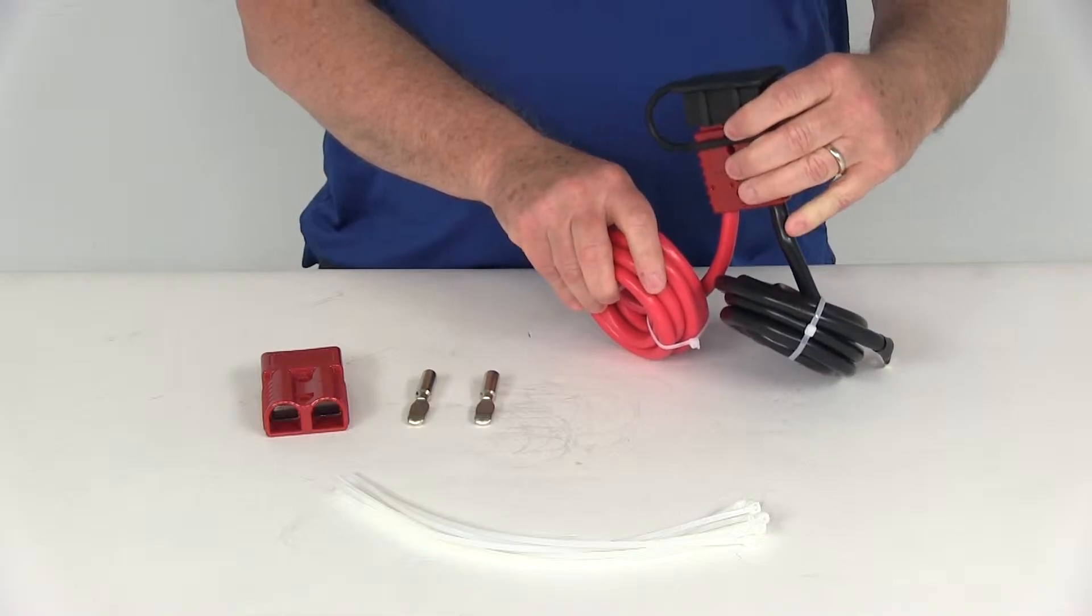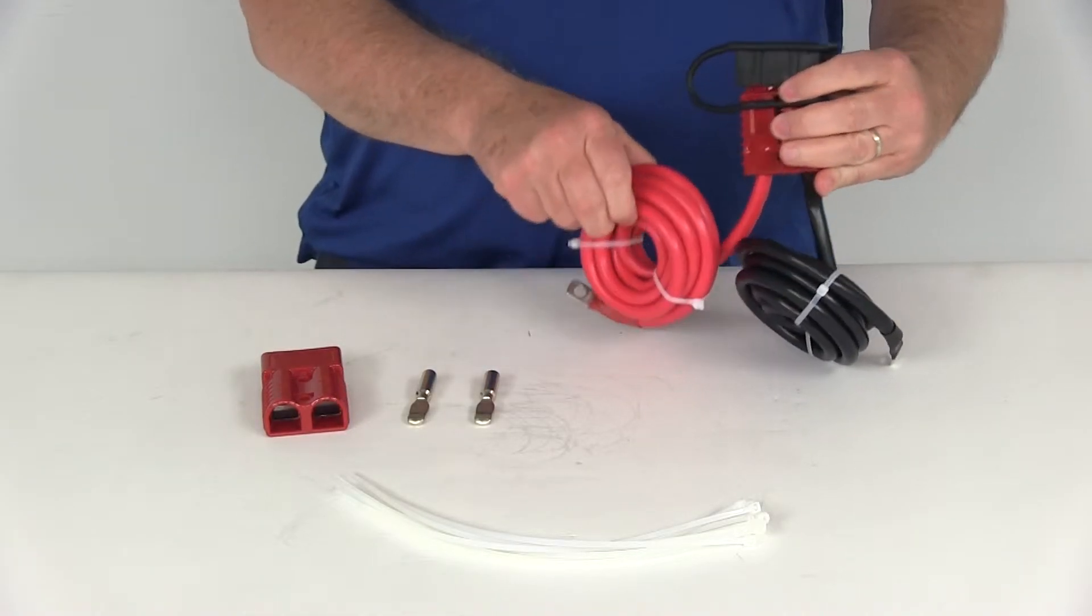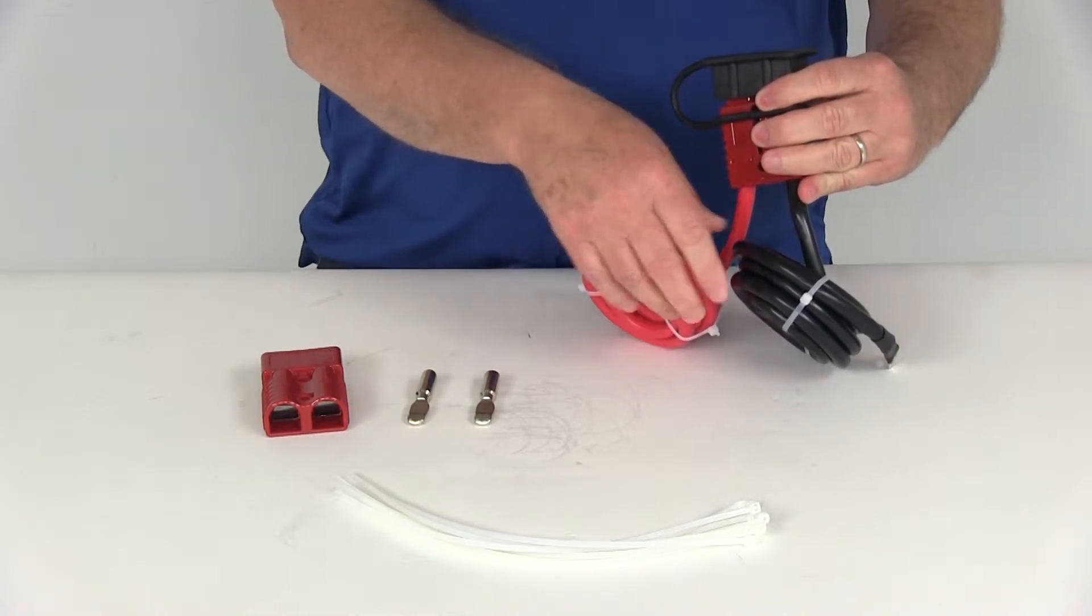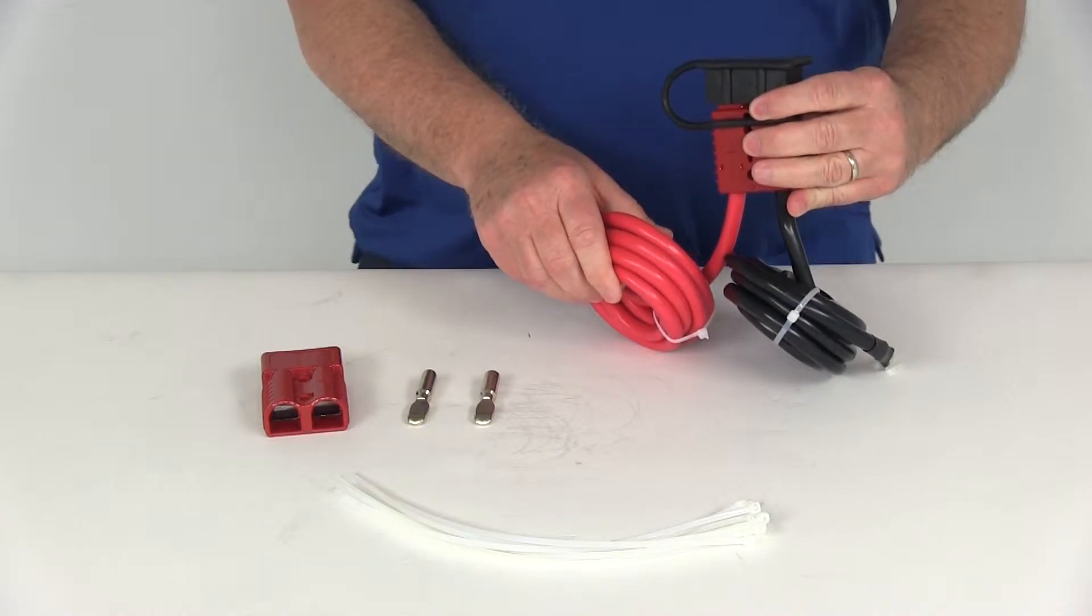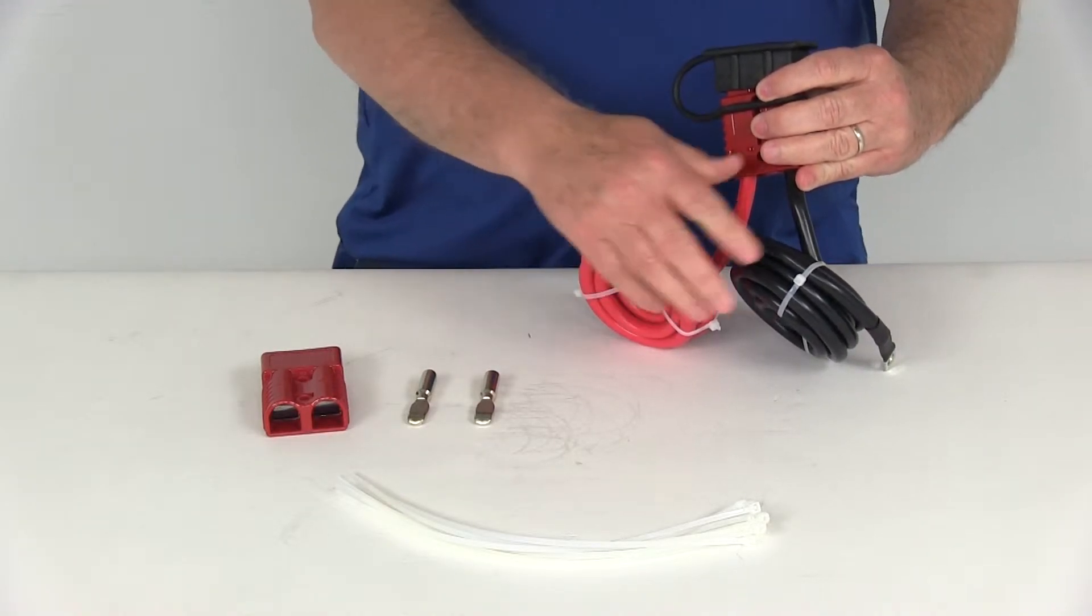As you can see, this section is fully assembled. It fits on your vehicle. It has the two wires, both the red and the black wire. They are about seven and a half feet long. One is the power, one is the ground.